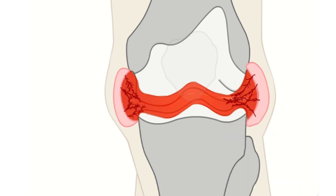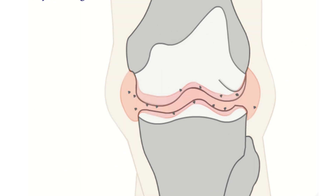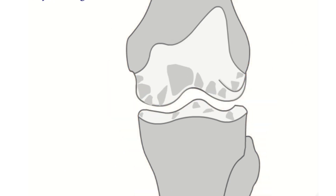Enzymes from the swollen synovium eat away at the cartilage that cushions the ends of the bones in the joint. The longer the synovium stays swollen, the more damage occurs. Eventually the cartilage is eaten away and the bone begins to grind against bone, causing pain and reducing the joint's range of motion.